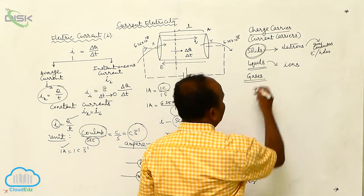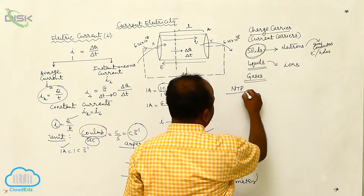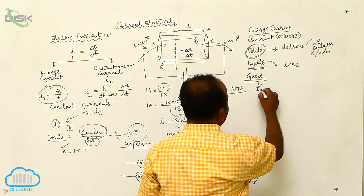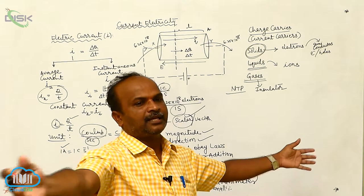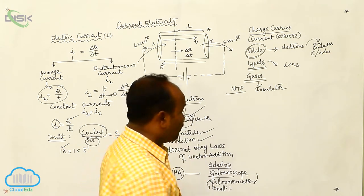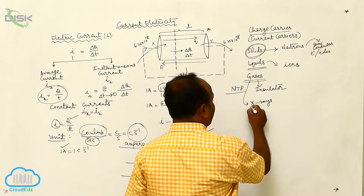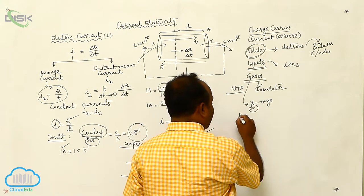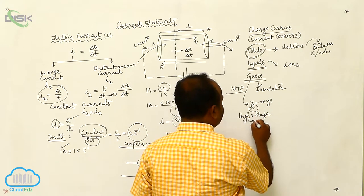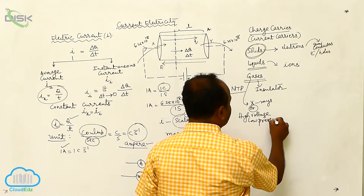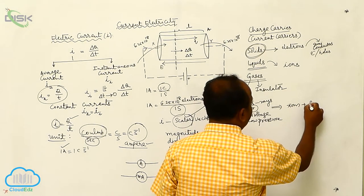At ordinary temperature, at NTP, gases are insulators. At room temperature, all gases are insulators. However, when gases are exposed to X-rays, or when high voltage and low pressure are applied, there is a creation of ions and free electrons.